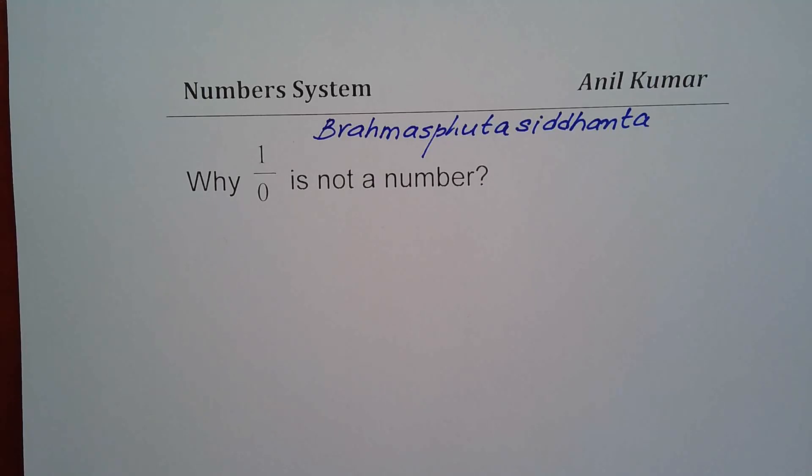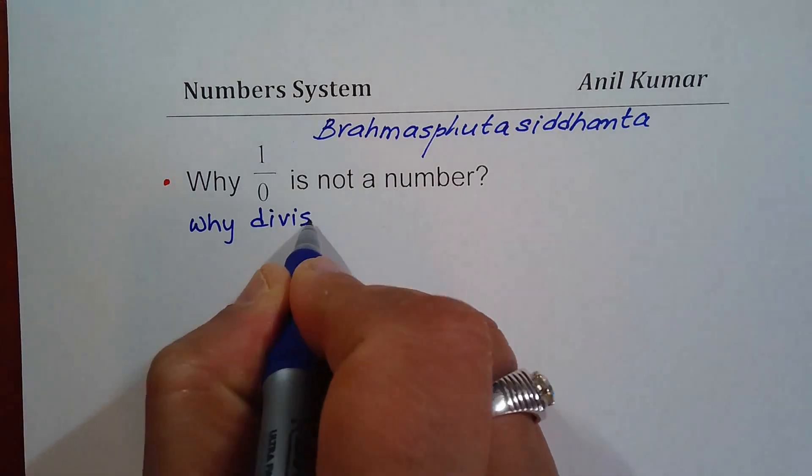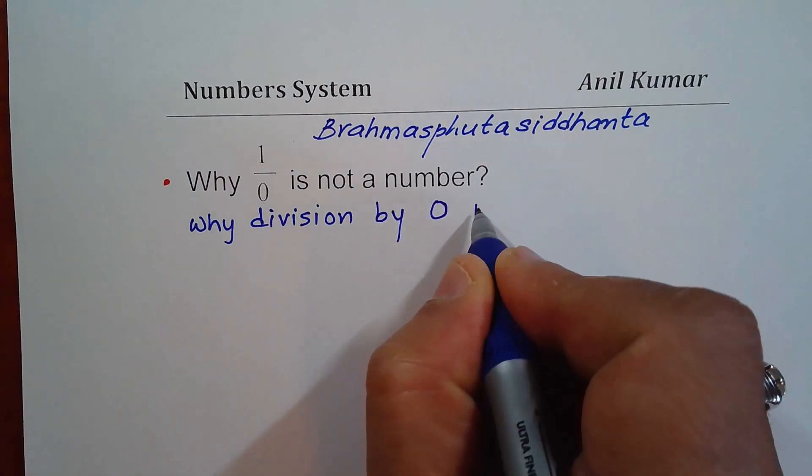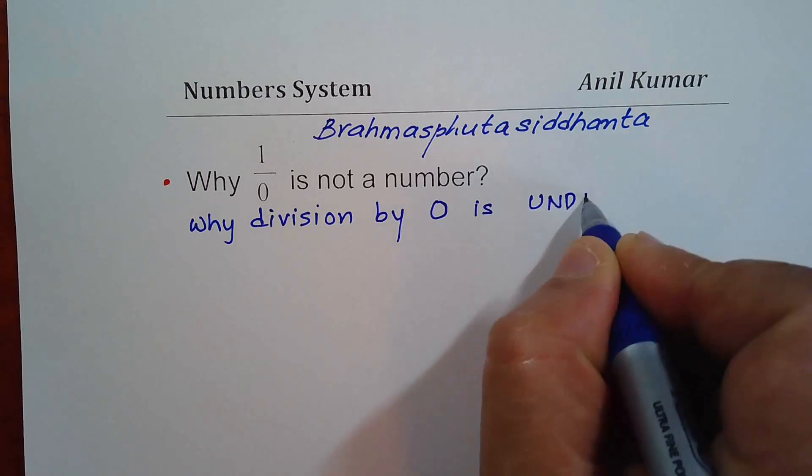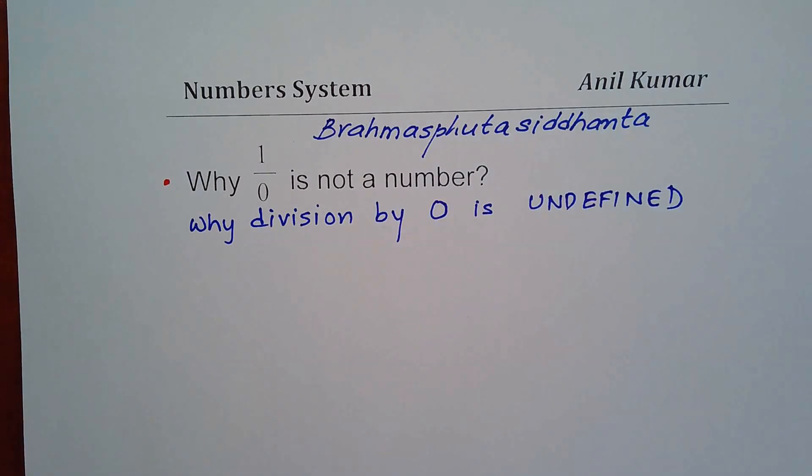I'm Anil Kumar and in this video I have taken up a very popular question relating to our number system. The question is why 1 over 0 is not a number. Another way of asking the same question is why division by 0 is undefined. Both are kind of similar questions, so we'll answer these questions in this particular video.